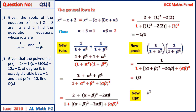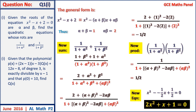Therefore, the new equation is given by x squared minus the new sum plus the new product equals 0. Multiplying all through by 2, we obtain 2x squared plus x plus 1 equals 0.